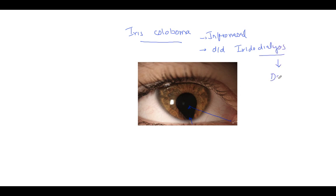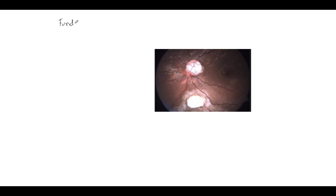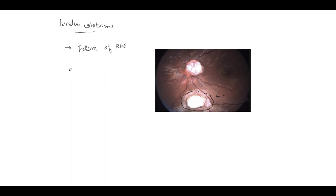This is a fundus coloboma. How to differentiate a fundus coloboma from a normal retinal attachment? Can you see the whitish spot? Basically, the retina and choroid are missing in this area and you are seeing the scleral show. So this is a fundus coloboma. An important point is that there is a failure of development of the RPE and the choroid in this area.